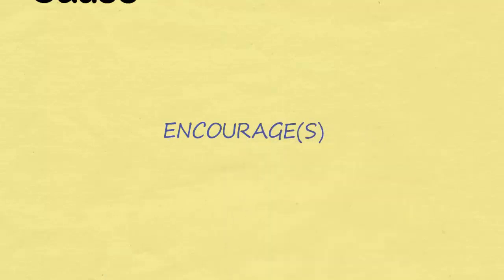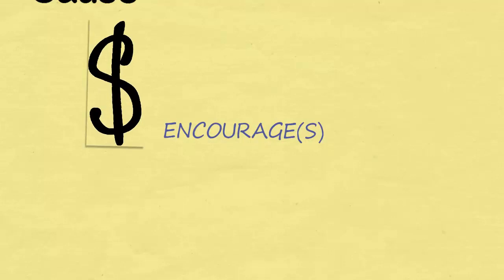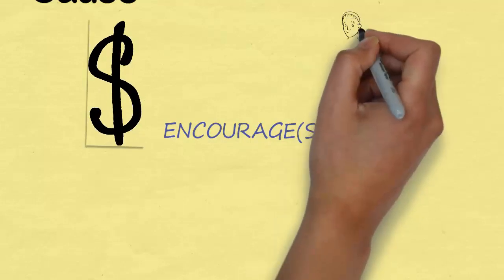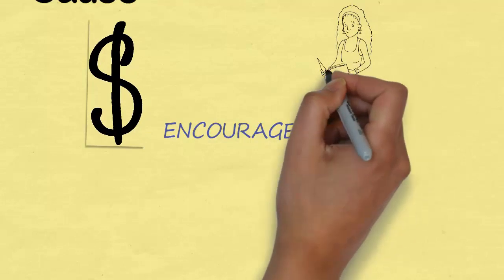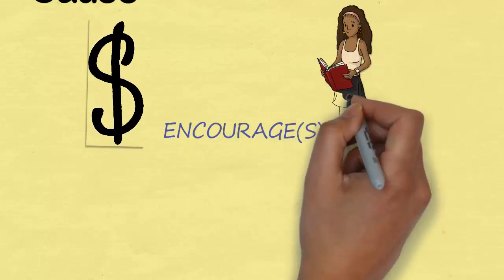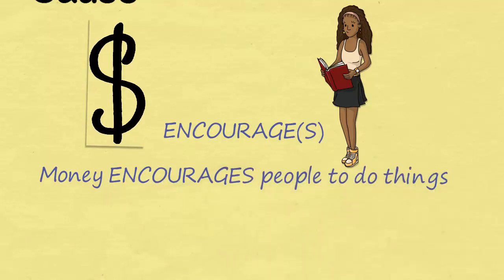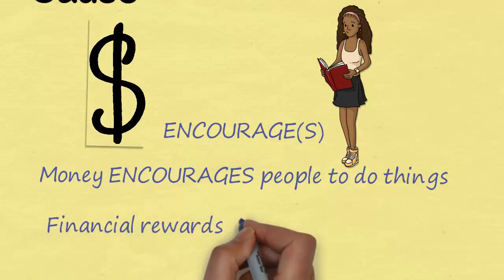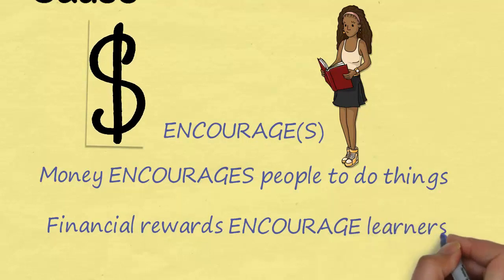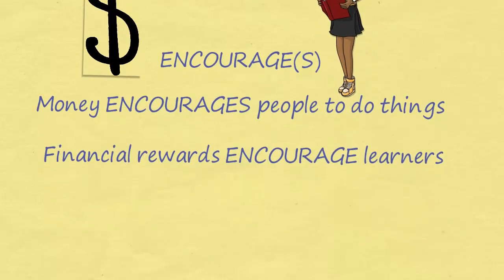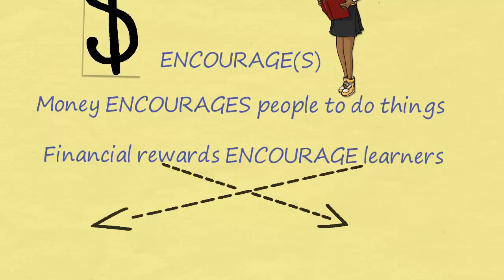The opposite of stopping is starting or doing something. A good academic verb to use there is 'encourage'. So money encourages people to do things. More academically, we could say 'financial rewards encourage learners.' We're just using a verb in the middle to infer a causal relationship — that's a nice, easy way to write about it. We could also switch it around and say 'learners are motivated by financial rewards.'